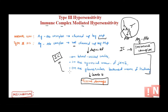So in type 3 hypersensitivity, the immune complex — which should normally be cleared — is instead not cleared and ends up getting deposited at different sites such as blood vessel walls, joints, and the basement membrane, leading to tissue damage. That is why it is called immune complex mediated hypersensitivity.